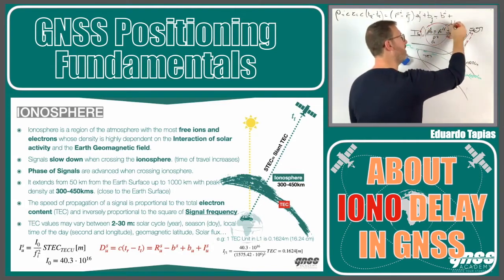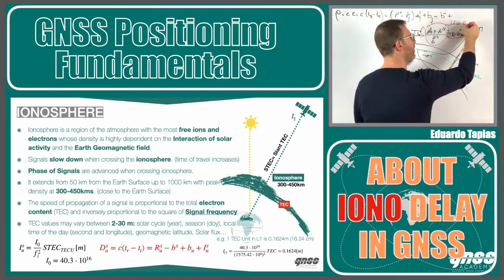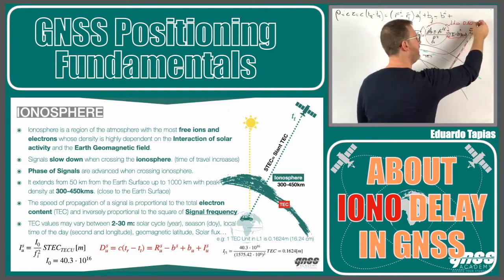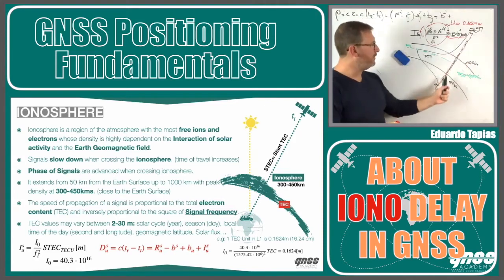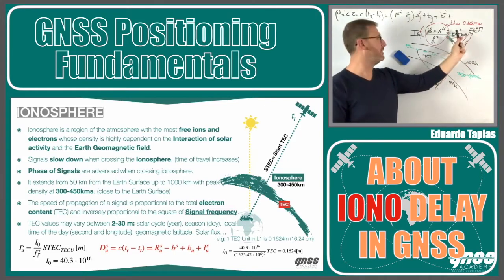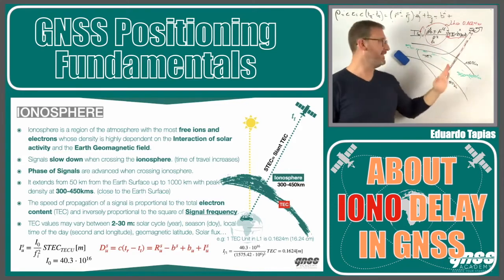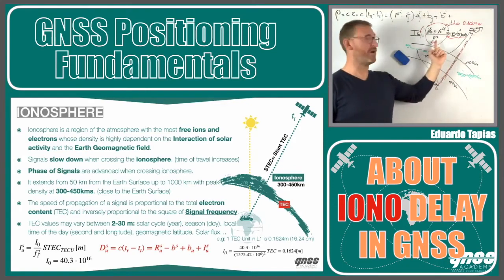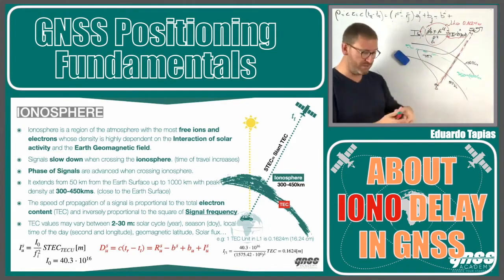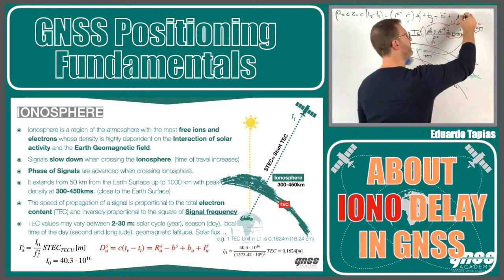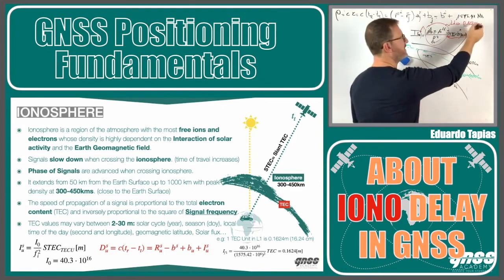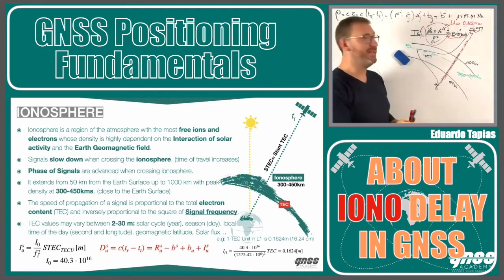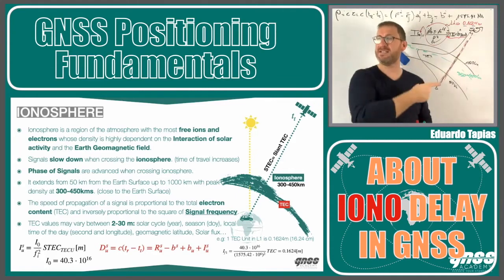For L1, this is something like 0.1624 meters. It means that each TECU of delay gives us 16 centimeters of delay in meters. This delay depends on the frequency. For a frequency of L1, which is 1575.42 MHz, it gives a computation of 0.1624 meters — meaning one TEC unit equals 16 centimeters.